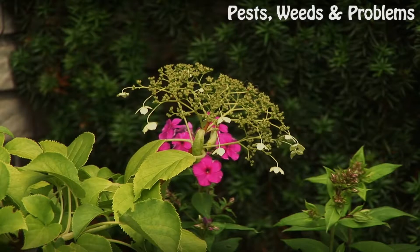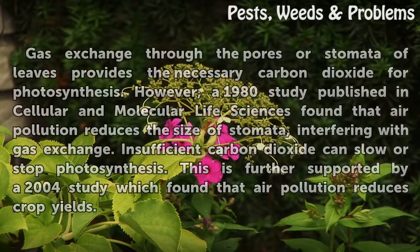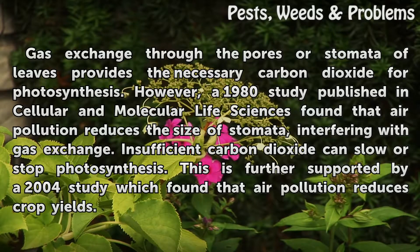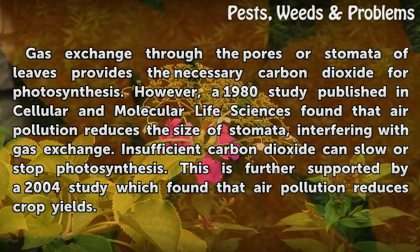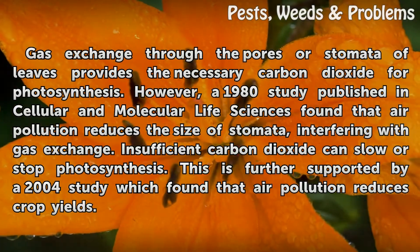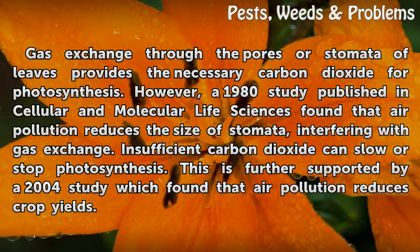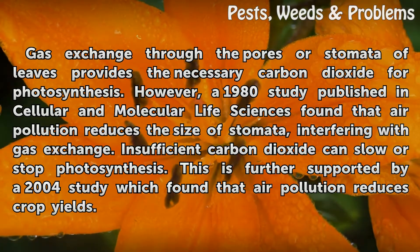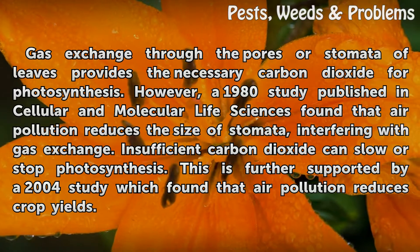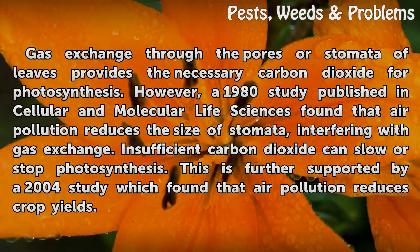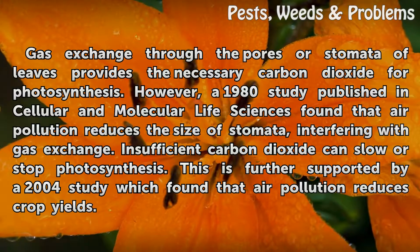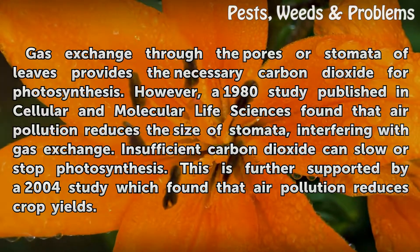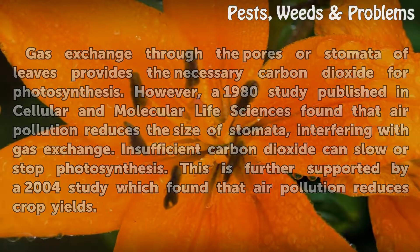Ozone and Leaves: Gas exchange through the pores or stomata of leaves provides the necessary carbon dioxide for photosynthesis. However, a 1980 study published in Cellular and Molecular Life Sciences found that air pollution reduces the size of stomata, interfering with gas exchange. Insufficient carbon dioxide can slow or stop photosynthesis. This is further supported by a 2004 study which found that air pollution reduces crop yields.